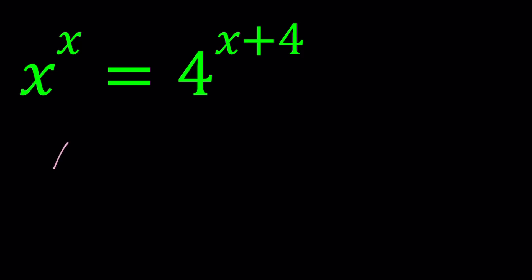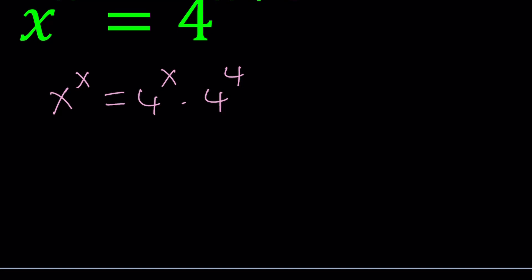So I'm going to go ahead and break down what's on the right-hand side into 4 to the x times 4 to the 4. And then I'm going to put together the terms that have x in them. So write it like x to the x divided by 4 to the x equals 4 to the power 4.